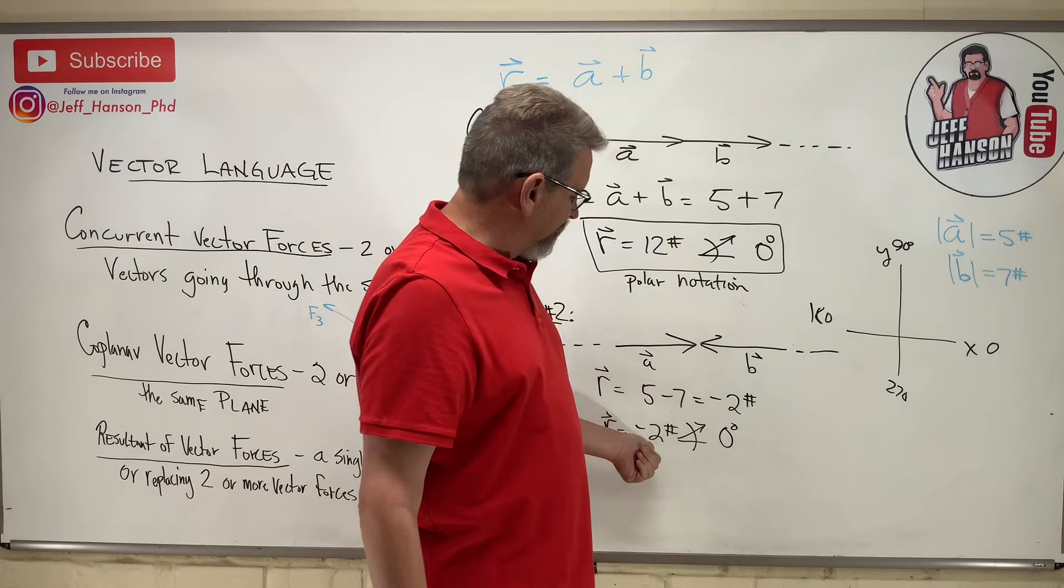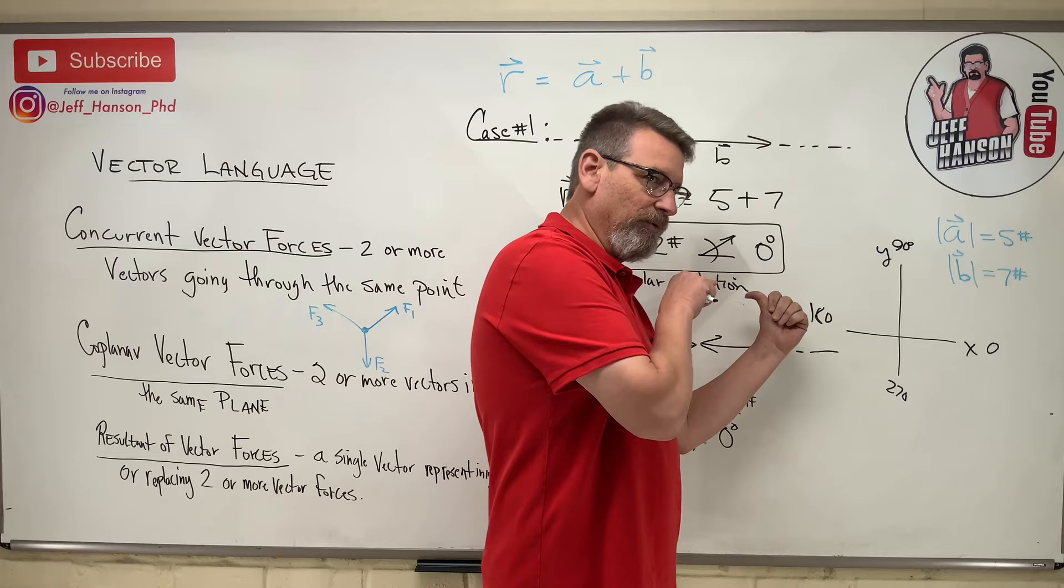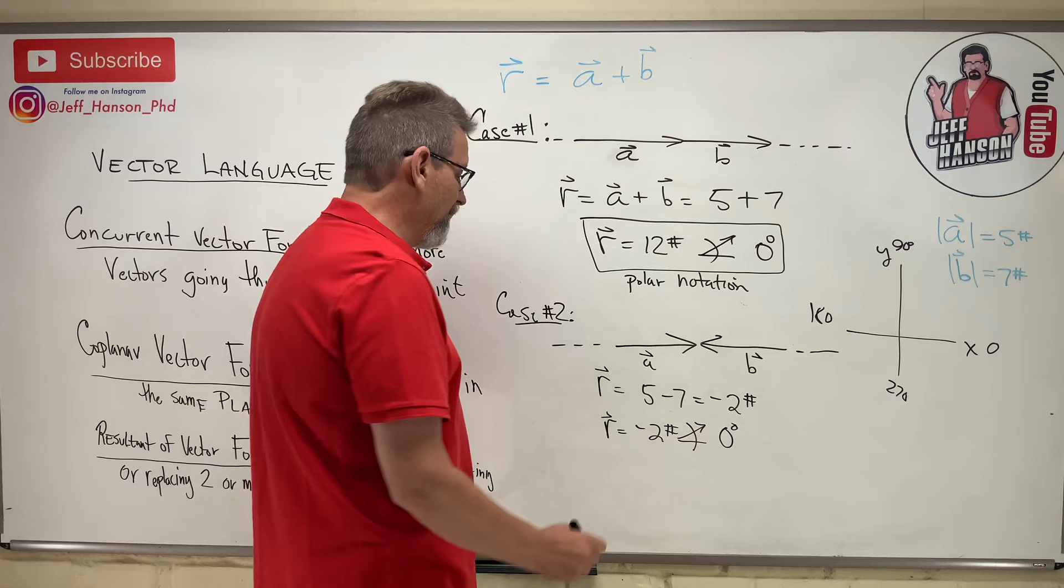Because, why? Well, because of the negative sign, right? Here's zero degrees, it's telling me go negative two. That's that way, right? And if I said it was 180, it was 180, and then go negative two, then it says go that way. It's almost like a double negative, right? We put 180 there. So this would be the correct answer.